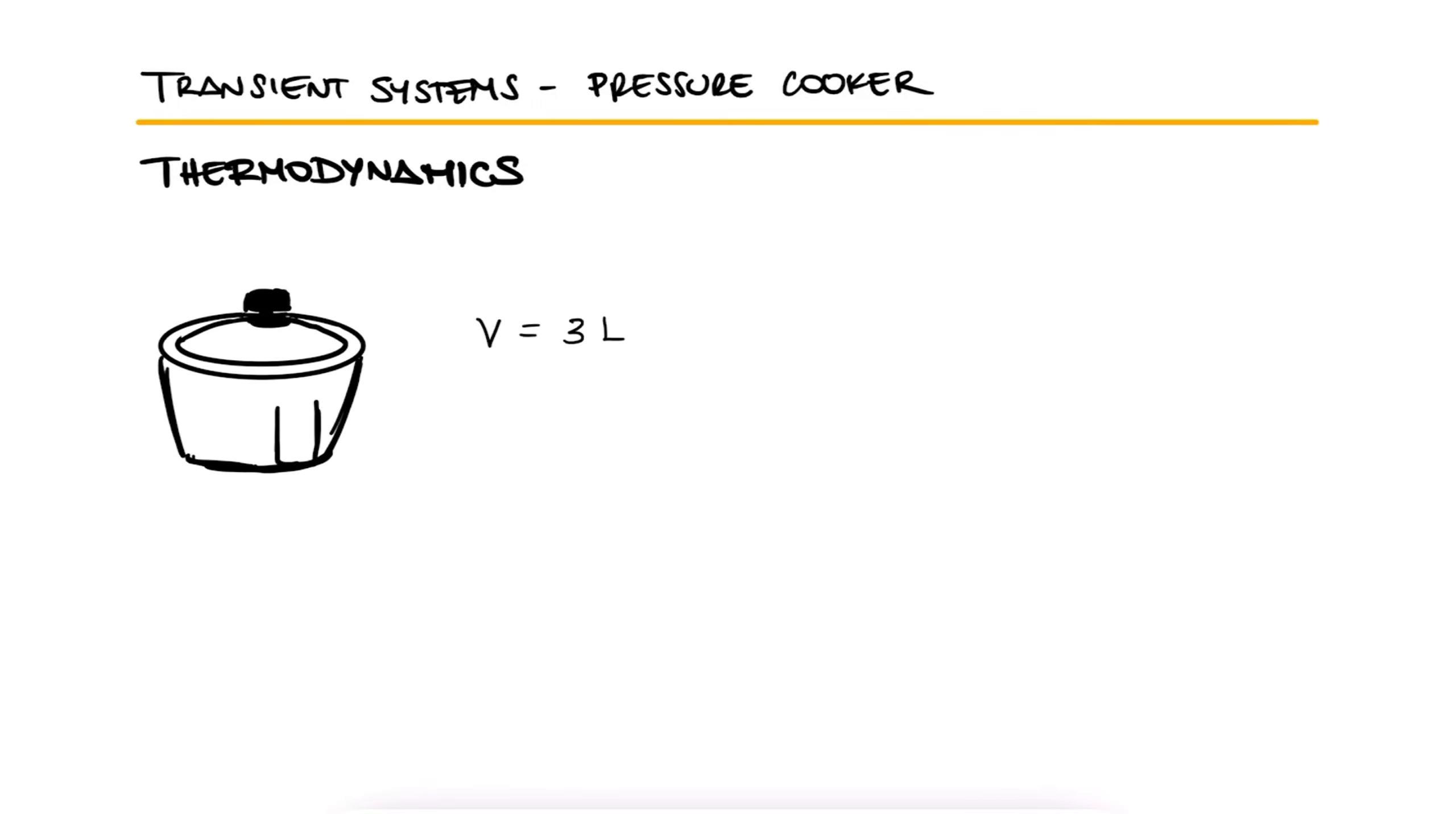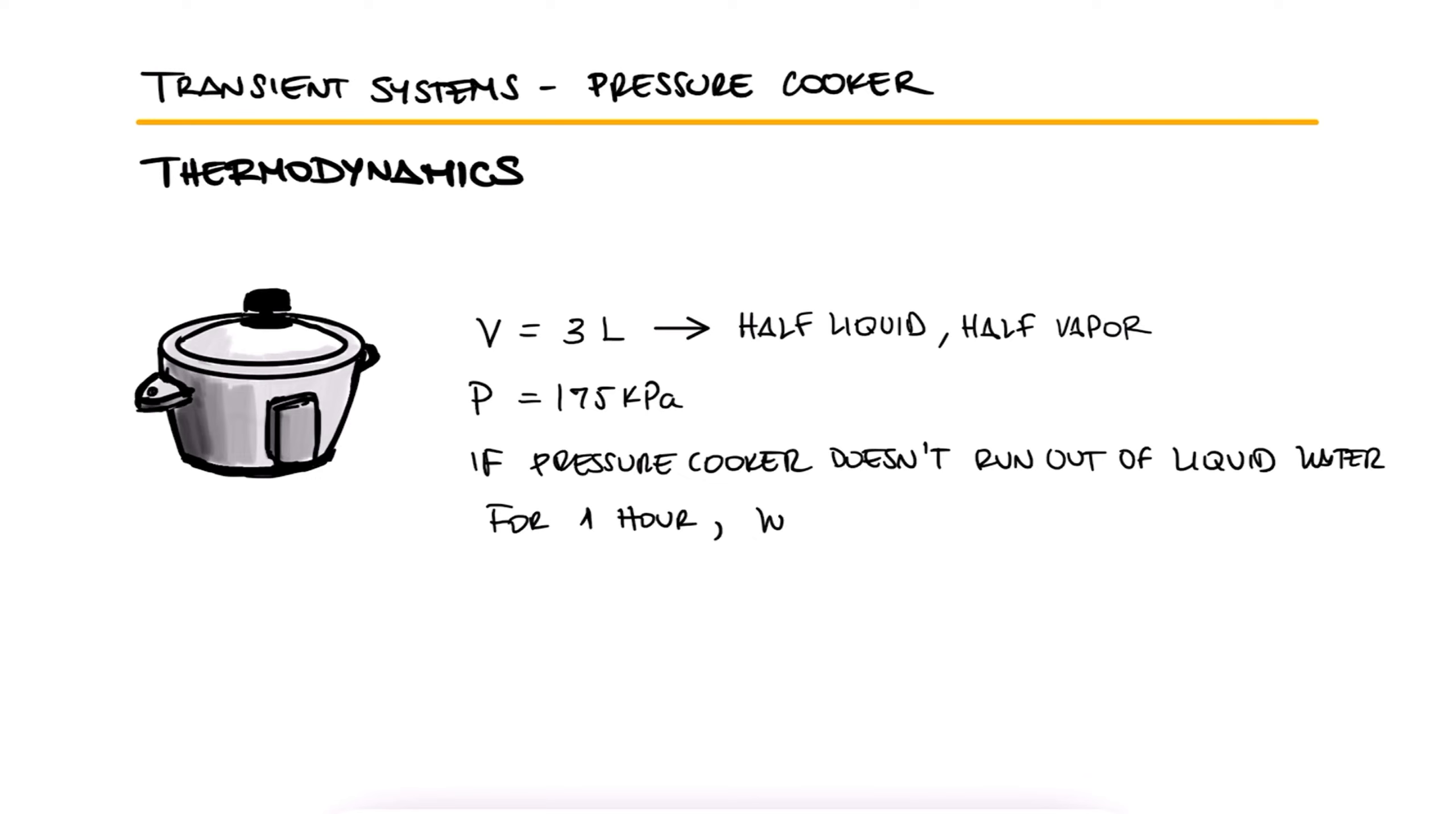A 3-liter pressure cooker has an operating pressure of 175 kilopascals. Initially one half of the volume is filled with liquid and the other half with vapor. If it's desired for the pressure cooker to not run out of liquid water for one hour, what is the highest rate of heat transferred allowed?